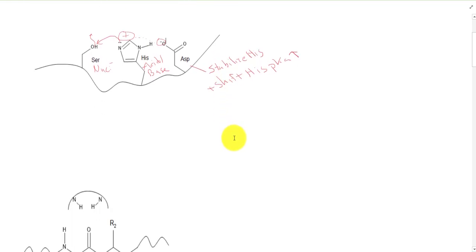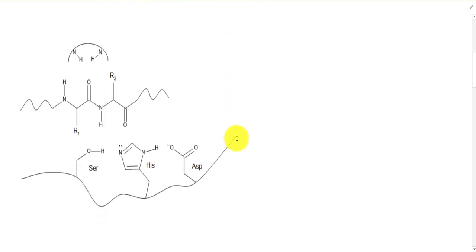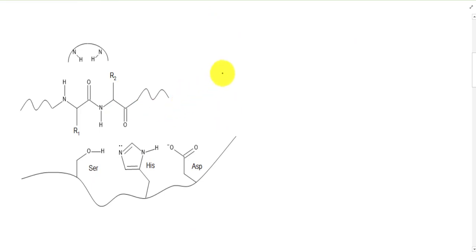So what we're going to see here as we move along is our substrate is going to bind, and you can see our substrate is a polypeptide. The rest of the chain is here. Different serine proteases will have different specificities.